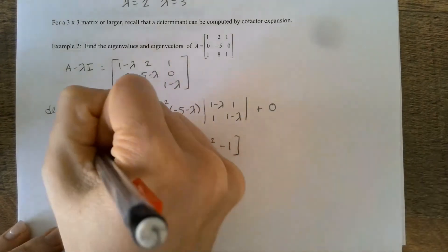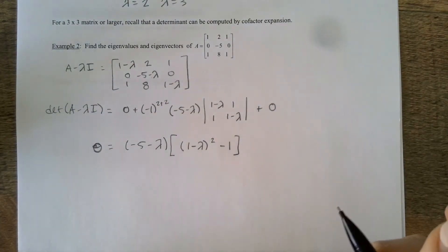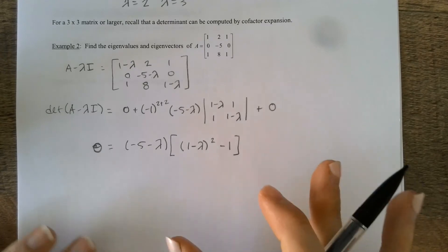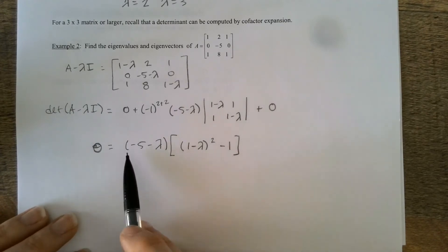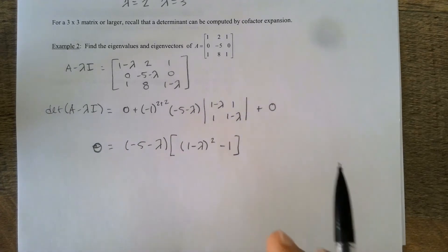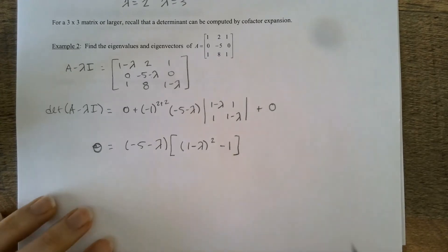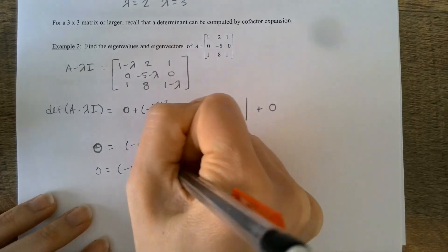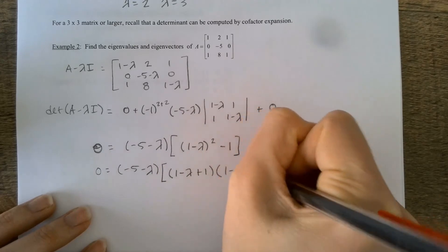Now I want this determinant set equal to zero. I don't want to expand this fully — it's already in partially factored form. I know that negative five minus lambda gives one of my lambdas, but I also need to set the second factor equal to zero. That expression (one minus lambda) squared minus one is still the difference of squares. So it factors as (one minus lambda plus one) times (one minus lambda minus one).